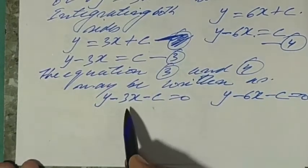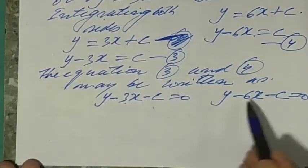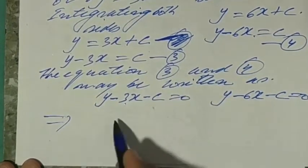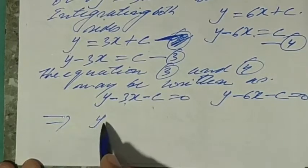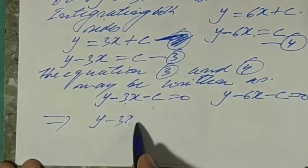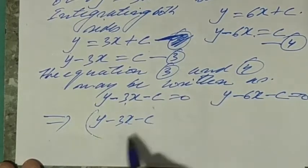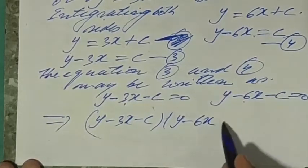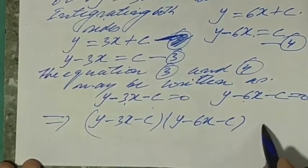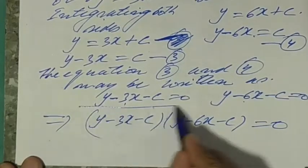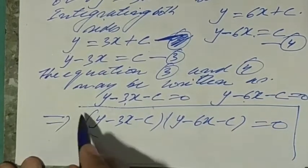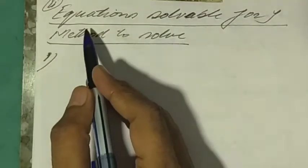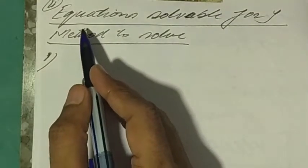The required solution is the product of these two equations: (y - 3x - c)(y - 6x - c) = 0. This is the required solution of the differential equation.